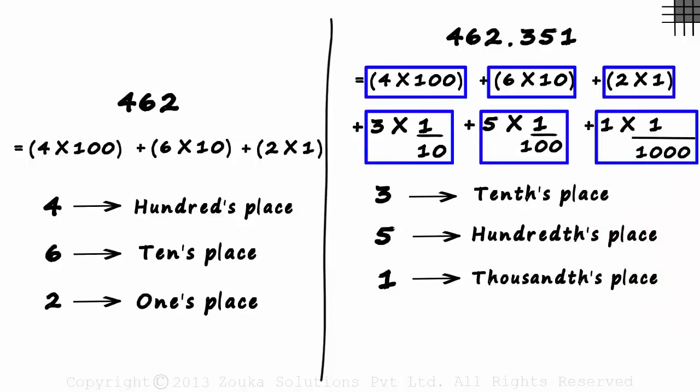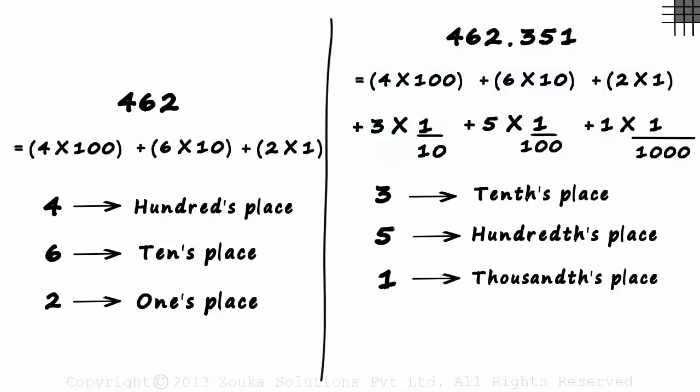If you add these six values, you get 462.351. Decimals are just another way of representing fractions. This number can also be written as 462,351/1000.